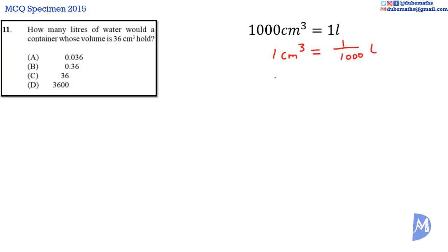And 36 cm³ is equal to 1 over 1000 multiplied by 36, which is equal to 36 divided by 1000. 36 divided by 1000, we move the decimal point in the 36 three spaces to the left. We get 0.036. The answer is A.